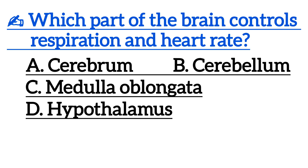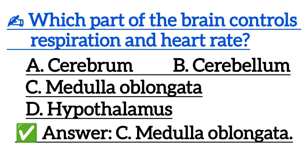Which part of the brain controls respiration and heart rate? Correct answer is option C: medulla oblongata.